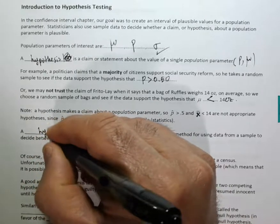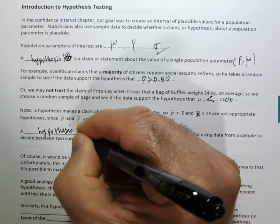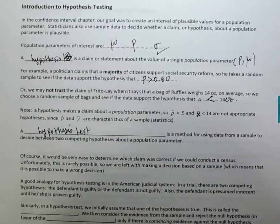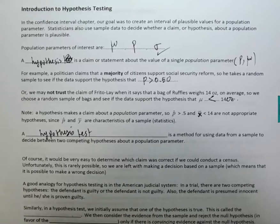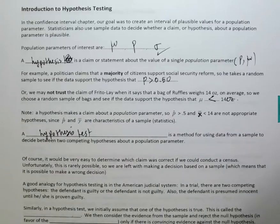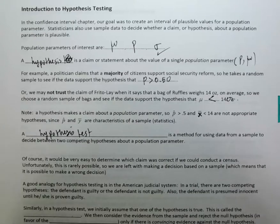A hypothesis test is a method for using data from a sample to decide between two competing hypotheses. Of course, it would be easy to determine if a claim is correct if we could do a census — survey the entire population — but that's not possible, so we take a sample and perform a hypothesis test.